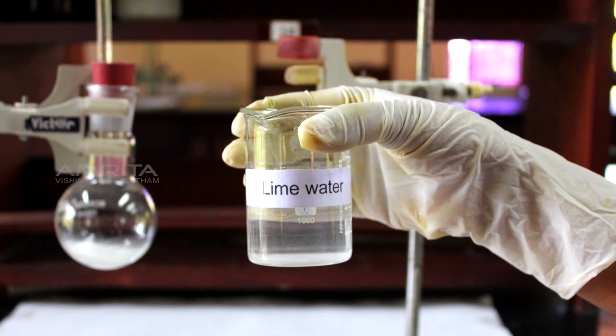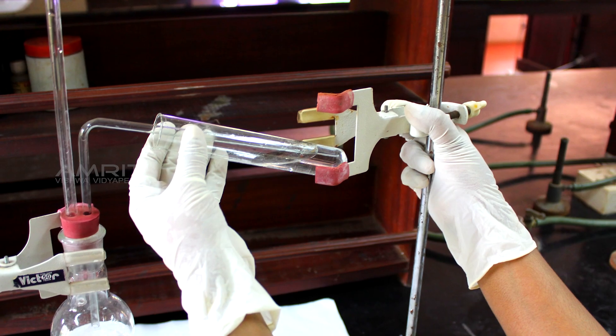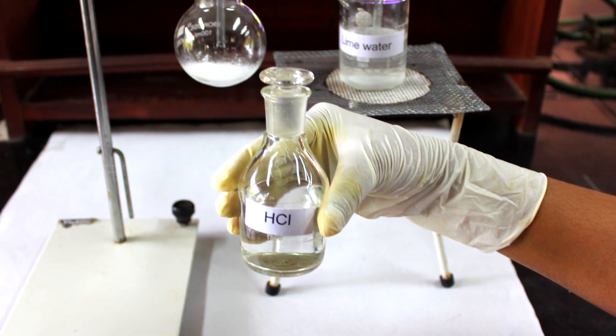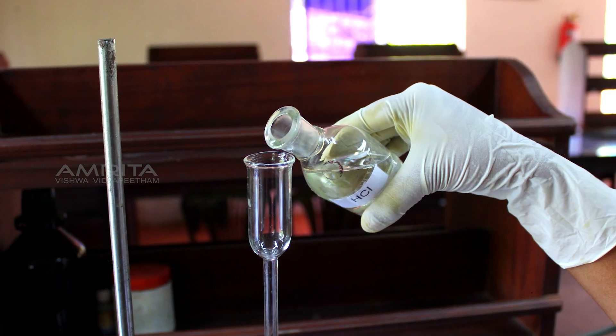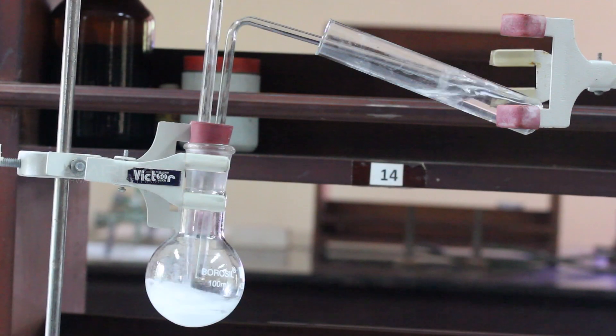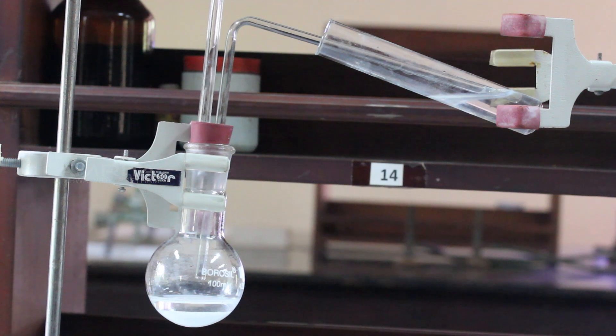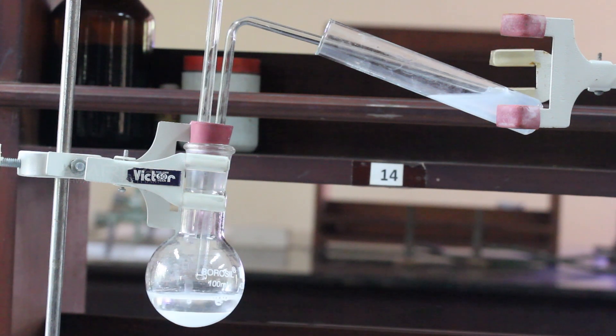Now, pour a small quantity of lime water into the boiling tube and clamp it with another stand. Then add HCl to the sodium carbonate solution in the flask using the thistle funnel. You can see that a gas evolves and passes through the lime water and turns it milky. Here, due to the action of HCl on sodium carbonate, carbon dioxide is formed which turns lime water milky.